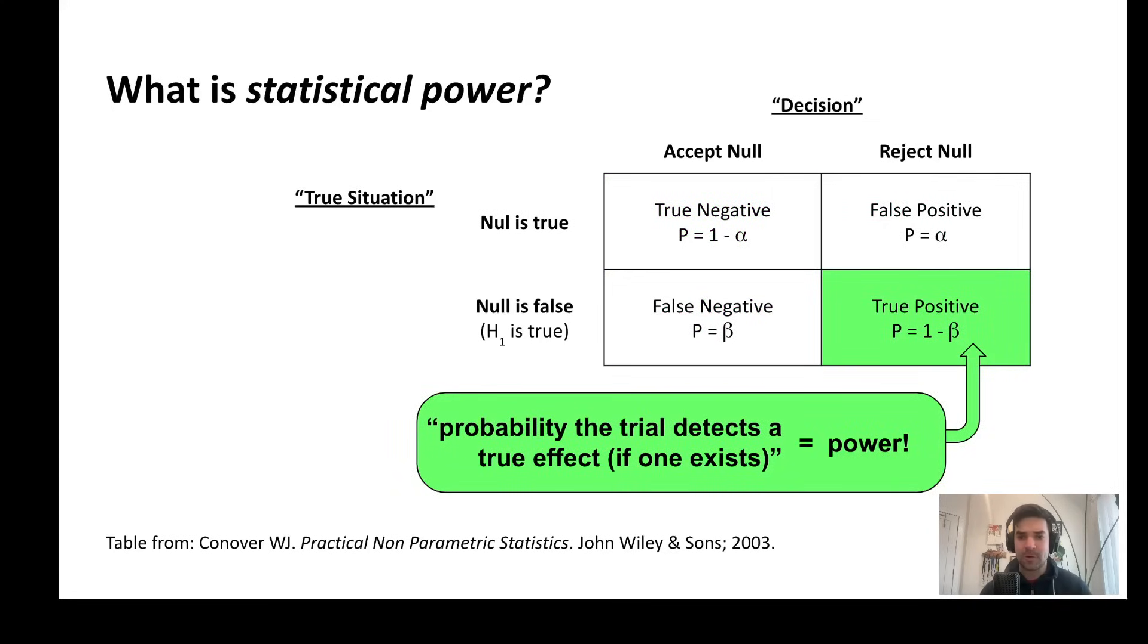So down in this corner, this is what we would call a true positive. And this is what power represents. It's the probability that the trial will detect a true effect if one exists.